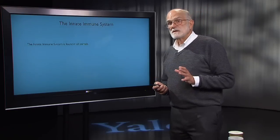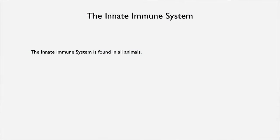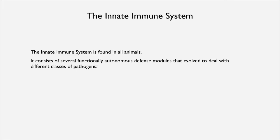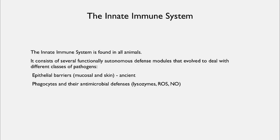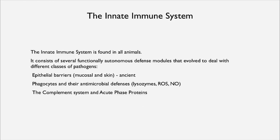The innate immune system is found in all animals — you can find it in jellyfish. It consists of some functionally autonomous defense modules that have all evolved to deal with different kinds of pathogens. It also has epithelial barriers, which are ancient; phagocytes and their antimicrobial defenses such as lysozymes, reactive oxygen species, and nitrous oxide; and the complement system and acute phase proteins — molecules that can coat, smother, or attach to incoming pathogens.